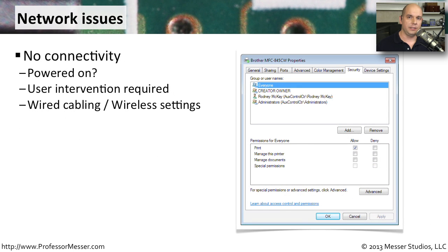These days printers often connect to the network — either wired or wireless — rather than directly to a computer. If the printer isn't connecting at all and you see no status from it, you've probably lost connectivity. Check that the printer is powered on, since it obviously won't work or be visible on the network without power. Also check the front panel for any messages waiting for user intervention, and verify networking settings — make sure you have a good cable on a wired connection, or that the wireless connection is configured correctly.